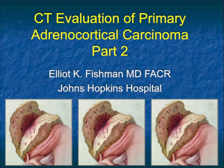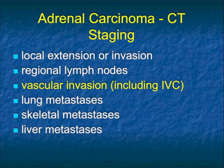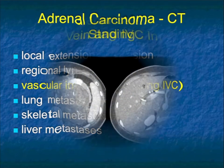Hi, this is Elliot Fishman, and welcome to part two of adrenal cortical carcinoma. We left off last time talking about vascular invasion and made the point that when we look at staging adrenal cancer, we look at the primary mass, and we look for extension locally, be it nodes, be it vascular involvement — think renal vein and IVC — and then distant lung mets, bone mets, or liver mets. Obviously, patients who have spread of disease, their survival is measured in months rather than in years.